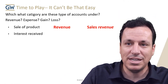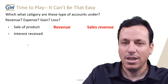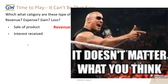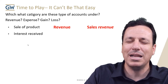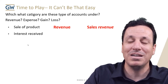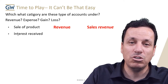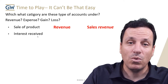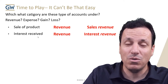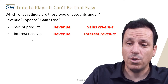Interest received — this is interest you receive. The name of the account matters a lot. Interest received means that you are the one getting interest. What's that going to be? That's going to be a revenue. It's not an expense. It's a revenue.